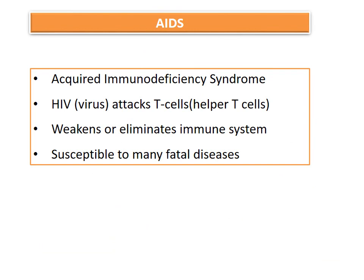Considering the pivotal role of helper T cells, what happens to the immune system when these helper T cells are destroyed? This happens in acquired immunodeficiency syndrome, in which the human immunodeficiency virus attacks the CD4 helper T cells and destroys them. As the count goes below 200 per millimeter cube of blood, it weakens or eliminates the whole immune system and makes the body susceptible to many debilitating or fatal diseases.